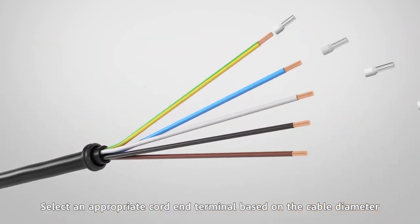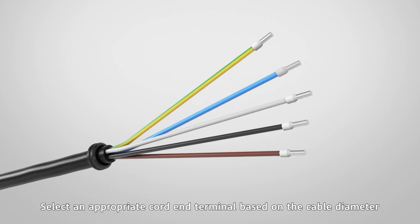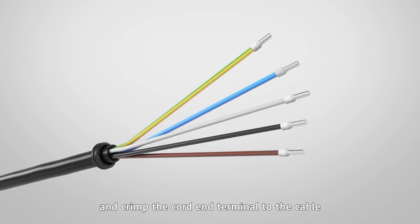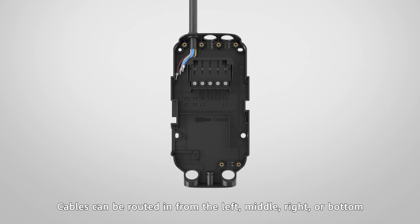Select an appropriate cord and terminal based on the cable diameter and crimp the cord and terminal to the cable. Cables can be routed in from the left, middle, right, or bottom.